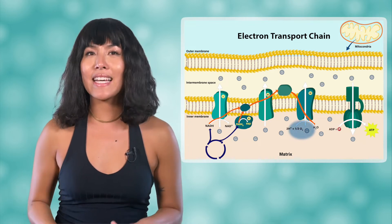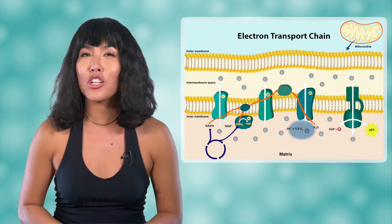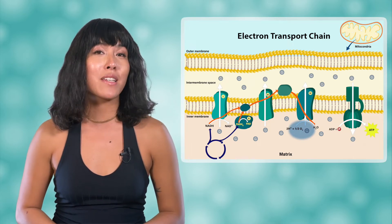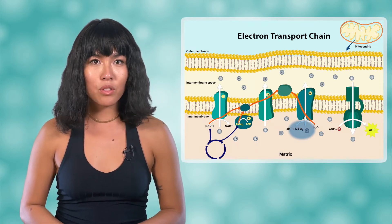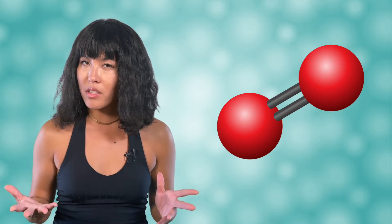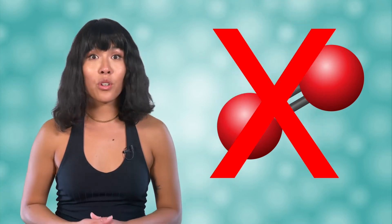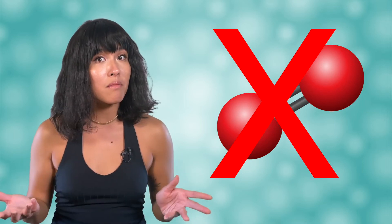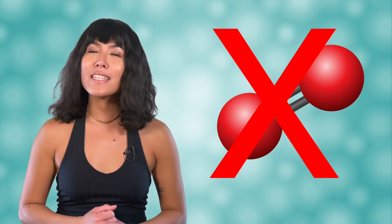Hey everyone, Bea here. In the previous lesson, we learned how living things use aerobic cellular respiration to convert chemical potential energy in glucose into the energy currency ATP. We saw how oxygen is the electron acceptor at the end of the electron transport chain, the step where the bulk of ATP is produced. Without oxygen, most of the ATP from cellular respiration cannot be made. So, what if oxygen isn't present? Are there any alternative methods for cells to break down fuel molecules and form ATP? It turns out, there are! Let's take a closer look.